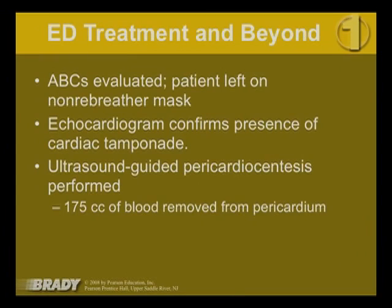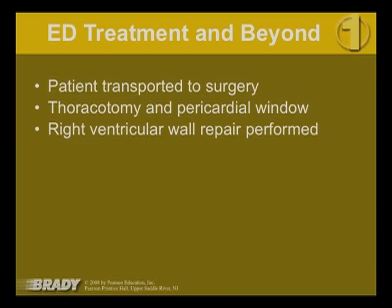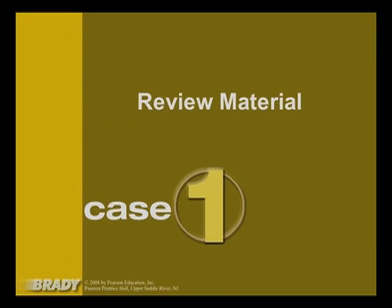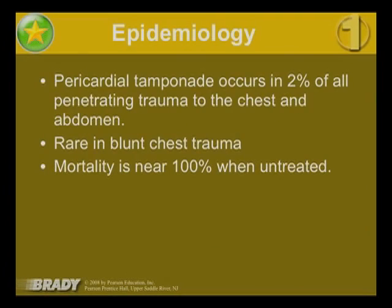An echocardiogram confirms the presence of cardiac tamponade, and an ultrasound-guided pericardiocentesis is performed — introducing a needle into the pericardial sac to remove excess fluid. 175 cc's of blood is removed from the pericardium. The patient is transported to surgery where a thoracotomy, pericardial window, and right ventricular wall repair are performed.